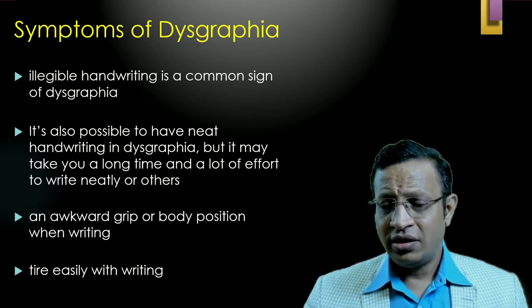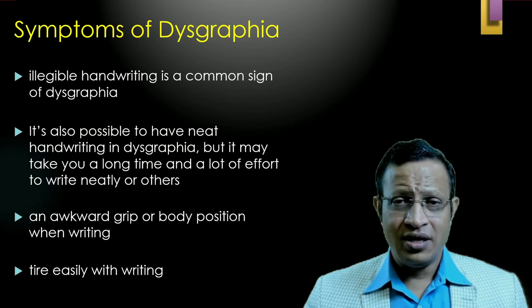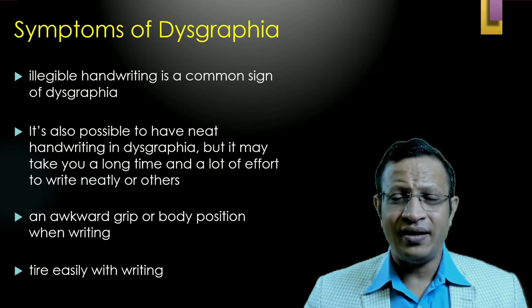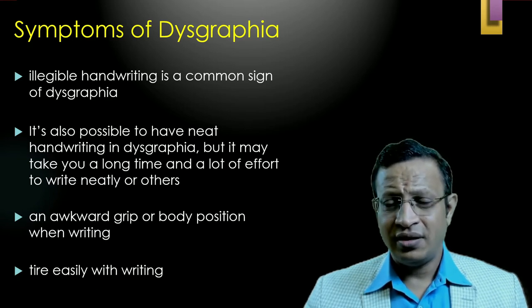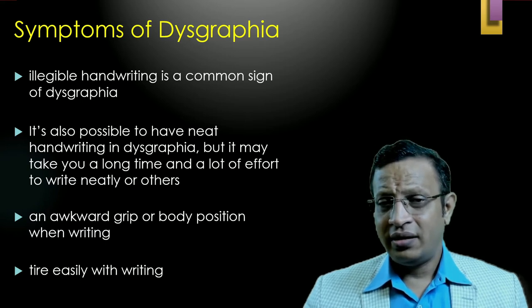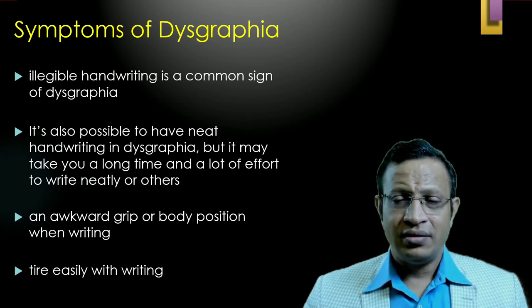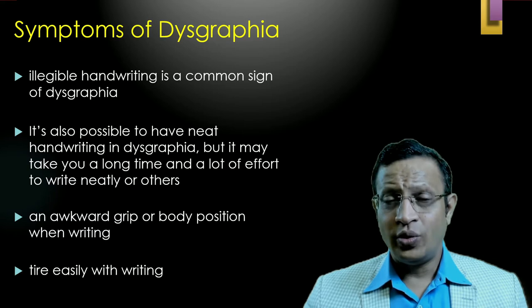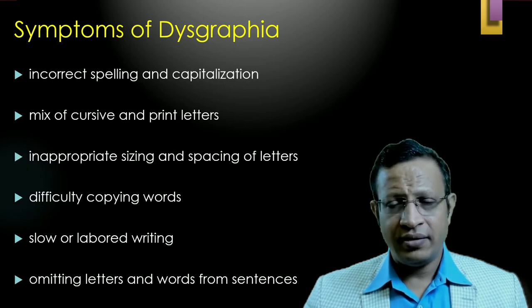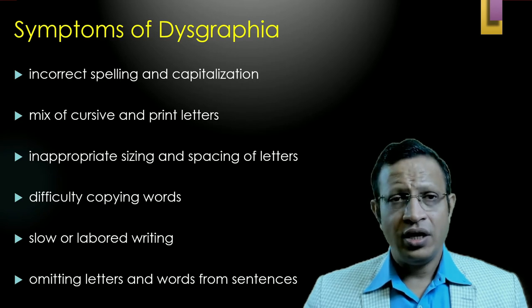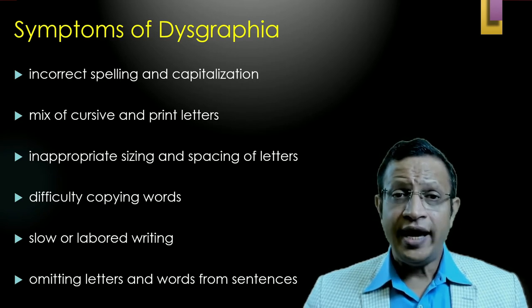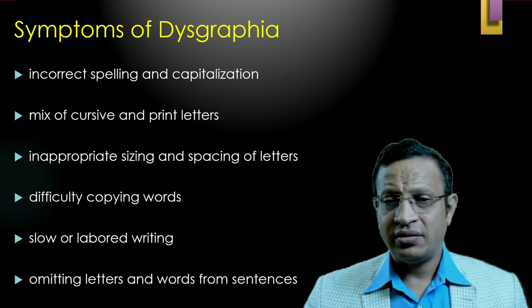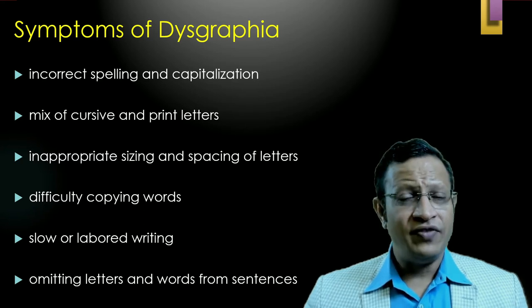Writing becomes a laborious process. There may be an awkward grip or body position when writing. They tire easily and take two to three times longer than normal kids — for example, if a typical child writes in five minutes, a child with dysgraphia will take twenty to thirty minutes. Other signs include incorrect spelling, wrong capitalization, a mix of cursive and print letters, inappropriate spacing, incorrect sizing of letters, using wrong capital or small letters, and difficulty in copying words.